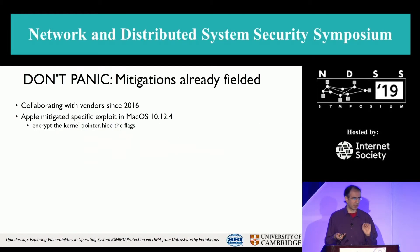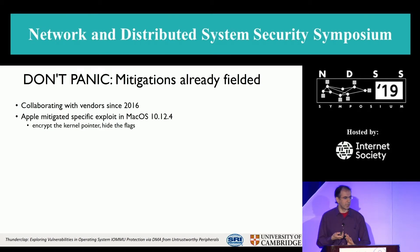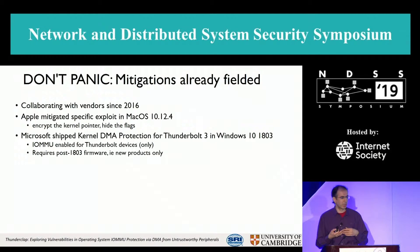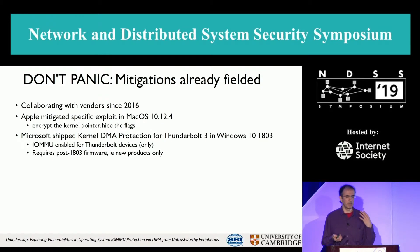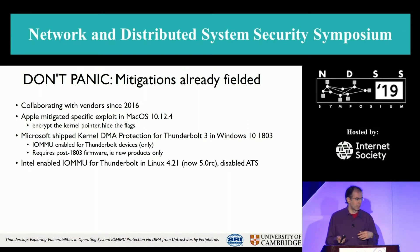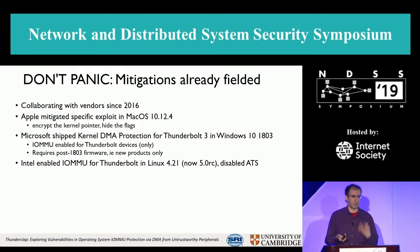Don't worry too much, because some of these vulnerabilities have been mitigated — we've been talking to vendors since 2016. Apple mitigated the specific exploit in MacOS 10.12.4: the kernel pointer is now encrypted, so we can't change it and get the kernel to execute it. Microsoft shipped kernel DMA protection for Thunderbolt 3 in Windows 10 version 1803, meaning the IOMMU is now turned on for Thunderbolt devices, requiring firmware support for 1803 or later. Intel enabled the IOMMU for Thunderbolt devices in what will be Linux kernel 5.0, and disabled ATS.